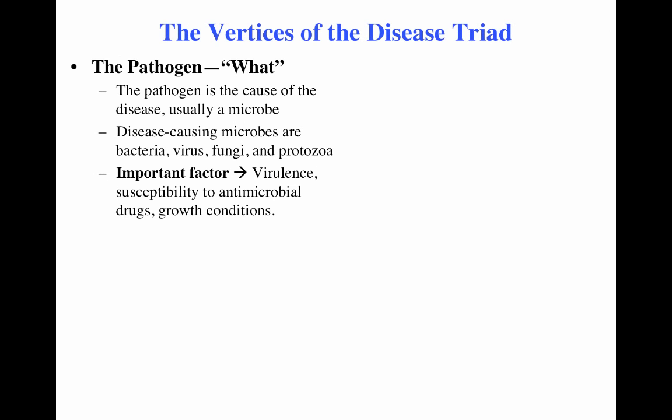We call the pathogen the 'what' — what is causing the illness. Pathogens can be any kind of microorganism: bacteria, fungus, virus, or protozoa. Important characteristics include their virulence, susceptibility to antibiotics, and growth conditions — for example, whether they need to grow aerobically or as obligatory intracellular parasites like Chlamydia or Mycobacterium tuberculosis, which grow inside host cells.